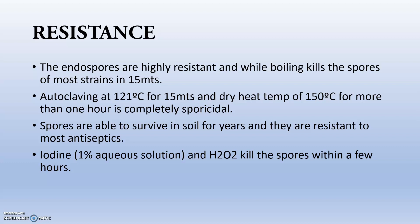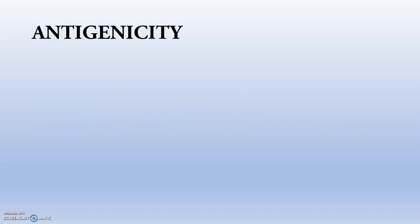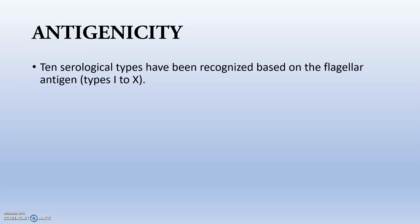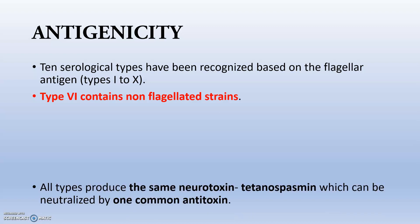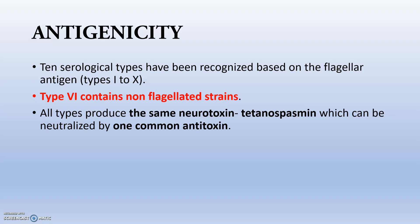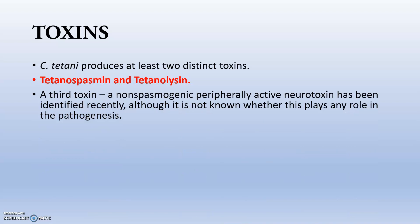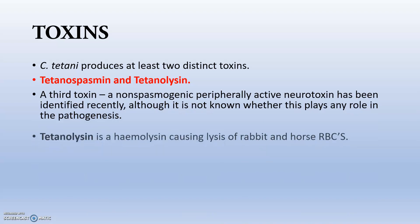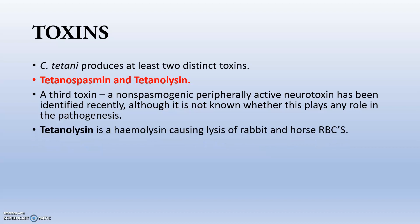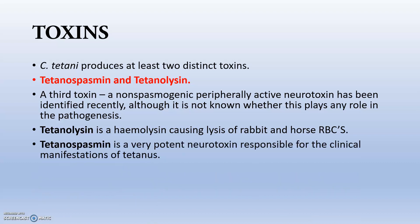A 1% aqueous solution of iodine and H₂O₂ kills spores within a few hours. Regarding antigenicity, 10 serological types have been recognized based on flagellar antigens (types 1 to 10); type 6 contains non-flagellated strains. All types produce the same neurotoxin — tetanospasmin — which can be neutralized by one common antitoxin. Two distinct toxins are produced: tetanospasmin and tetanolysin. A third non-spasmogenic toxin also exists but is of little significance. Tetanolysin is a hemolysin causing lysis of RBCs of rabbit and horse; tetanospasmin is a very potent neurotoxin responsible for clinical manifestations of tetanus.